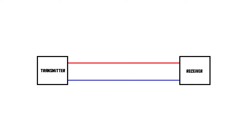So let's say we have a communication line — some sort of cable with two wires in it which are not twisted. These wires are simply straight wires right next to each other in a cable, and on one end we've got a sender, a transmitter, and on the other side we've got a receiver. We are going to transmit some sort of information through this cable using a method called differential signalling.